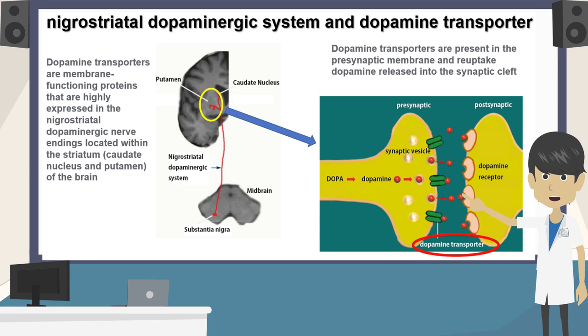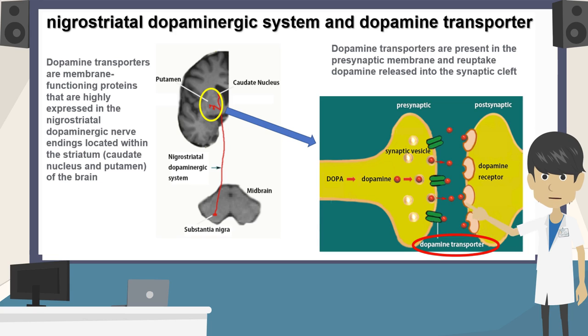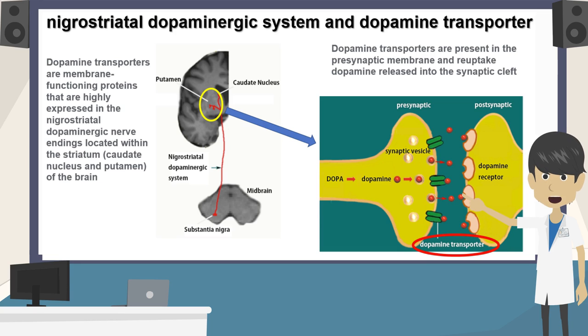The dopamine transporter is a membrane protein highly expressed in the striatum, which is the terminal portion of dopaminergic neurons originating from the substantia nigra.